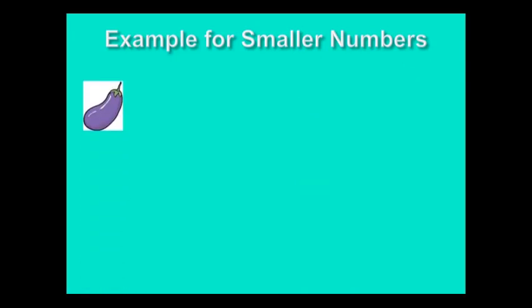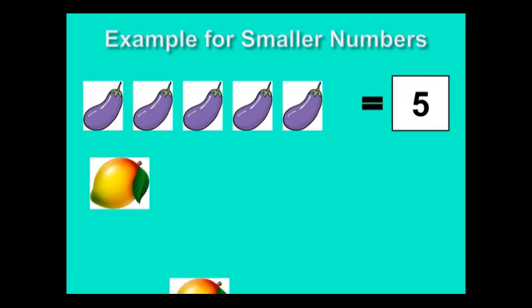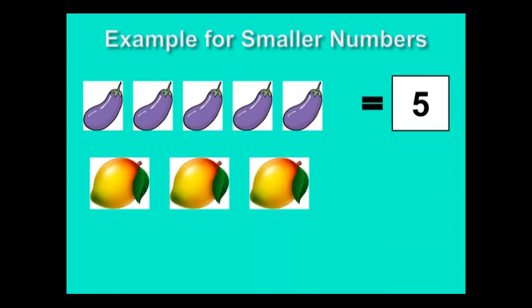1, 2, 3, 4, 5. There are 5 brinjals. 1, 2, 3. There are 3 mangoes. The number of mangoes are less. So, 3 becomes the smaller number here.